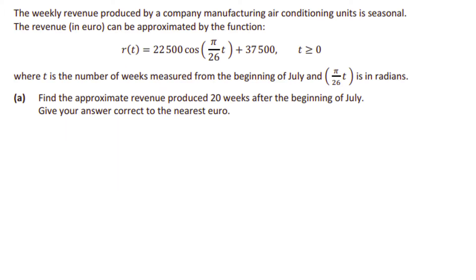The weekly revenue produced by a company manufacturing air conditioning units is seasonal. The revenue in euros can be approximated by a cosine function where t is the number of weeks measured from the beginning of July, and pi over 6t is in radians. Find the approximate revenue produced 20 weeks after the beginning of July, correct to the nearest euro.